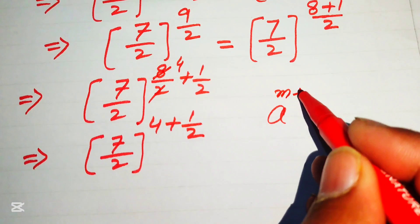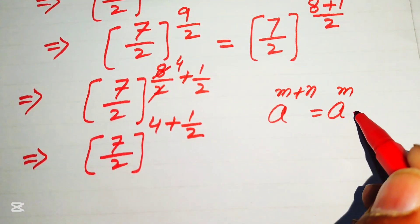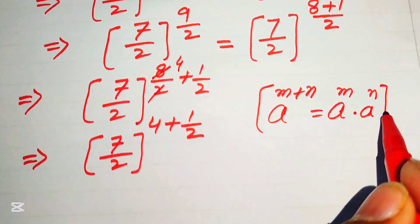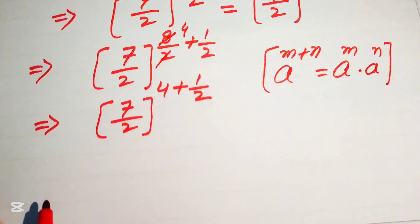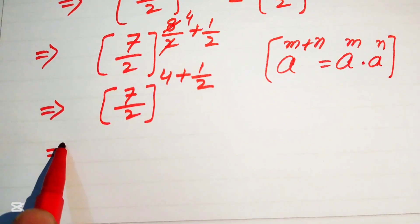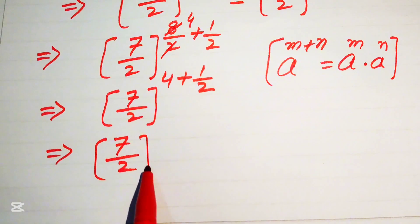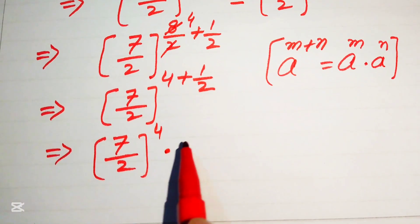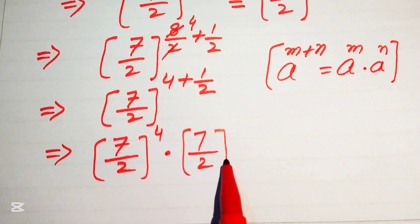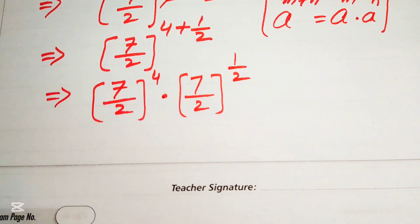We apply the exponent law a^(m+n) = a^m × a^n. According to this law we break the exponent, writing the expression as (7 over 2) to the power of 4, multiplied by (7 over 2) to the power of 1 over 2.